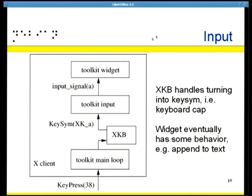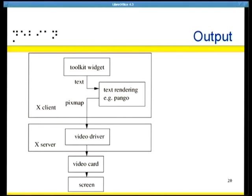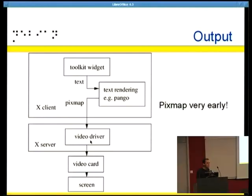This is just one event among all the other events at the client. The toolkit gets this event, sees it's a key press, and pushes it to XKB, which translates it into a keysym — so now it is really A. The input engine turns that into a signal sent to the widget, which decides to do something — for instance, append A to the text. Then we have output: the widget uses a text rendering engine like Pango, and what comes out of the client is a pixmap, not text, which is pushed to the driver and to the video card.